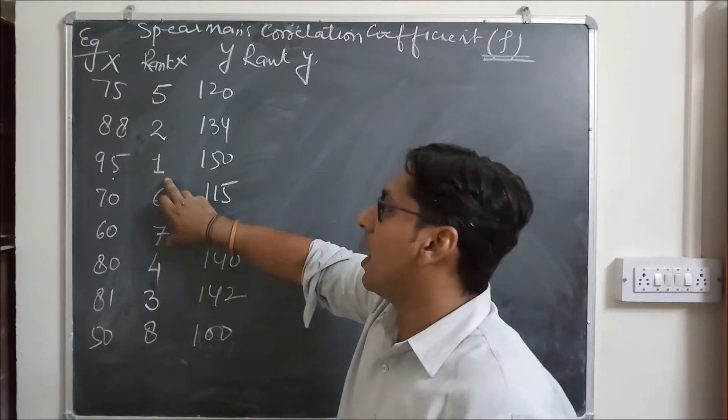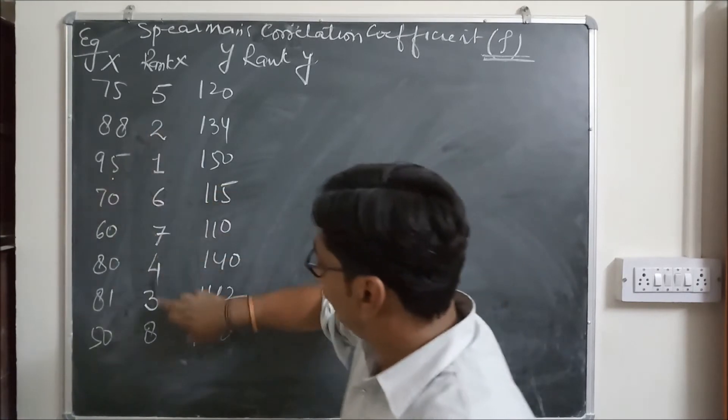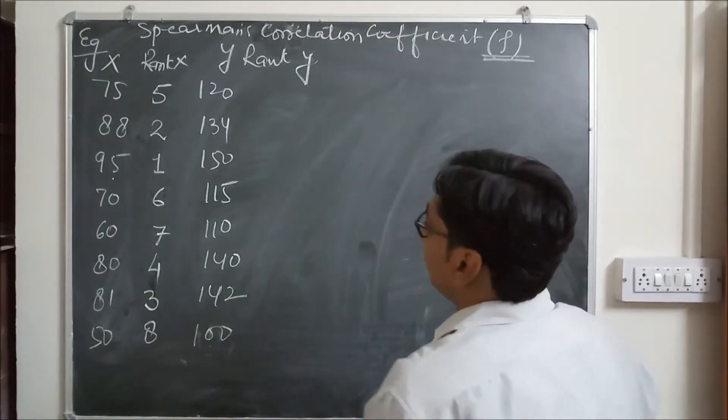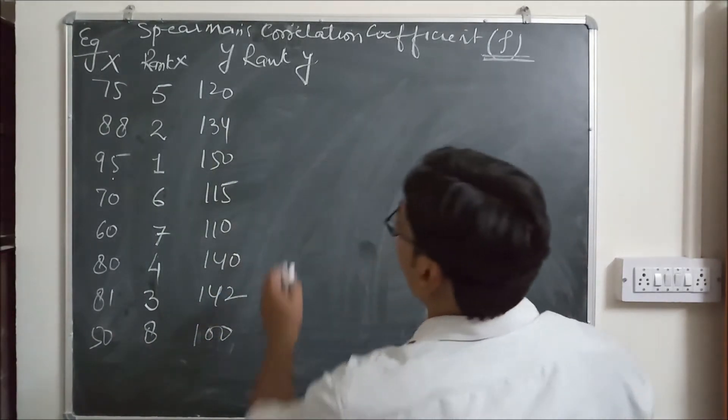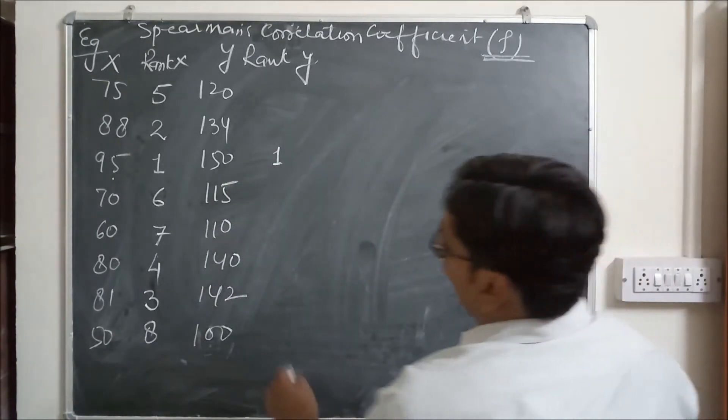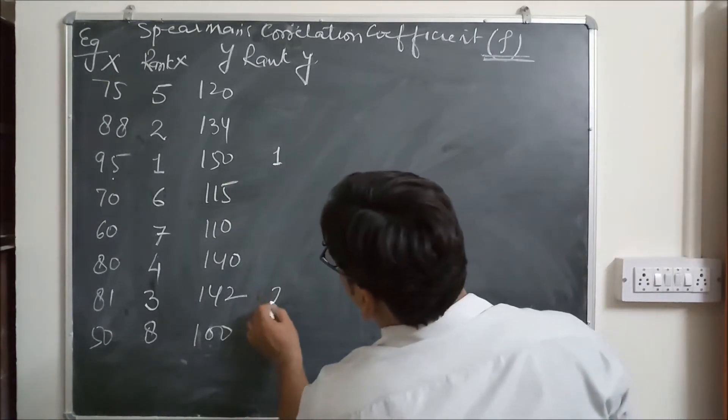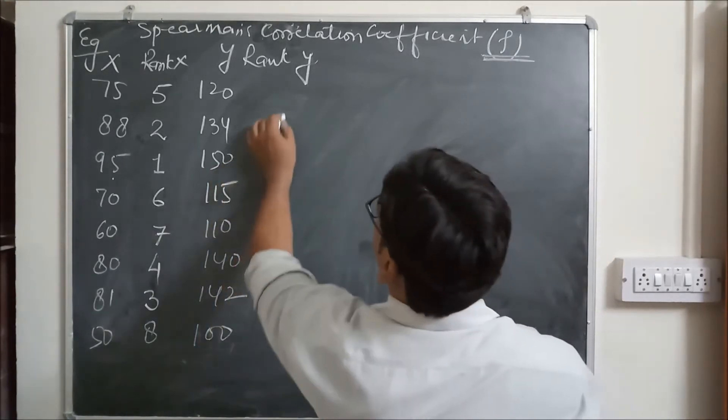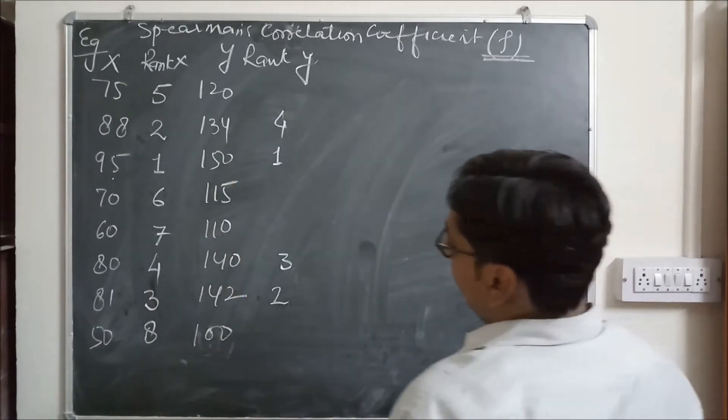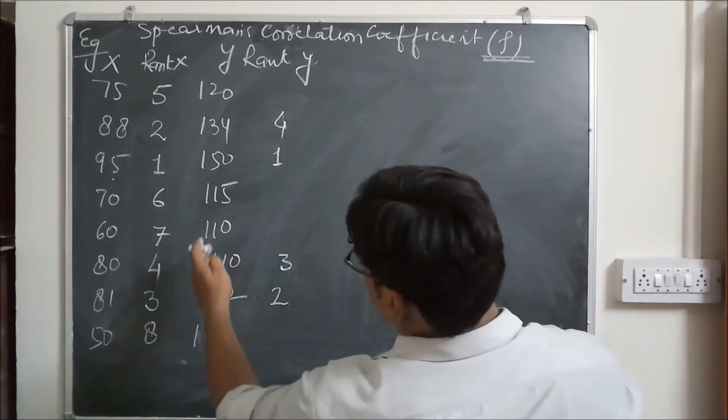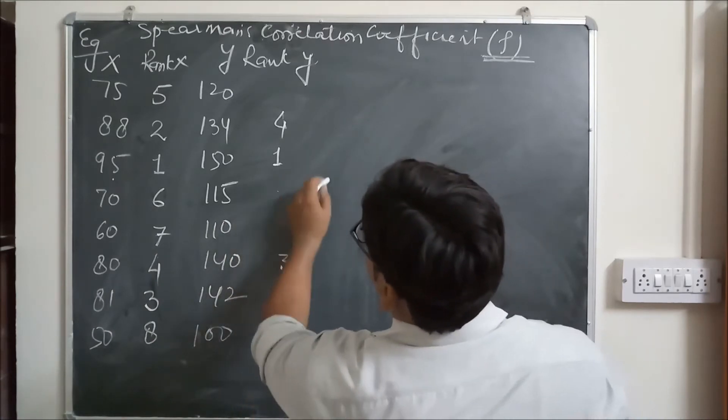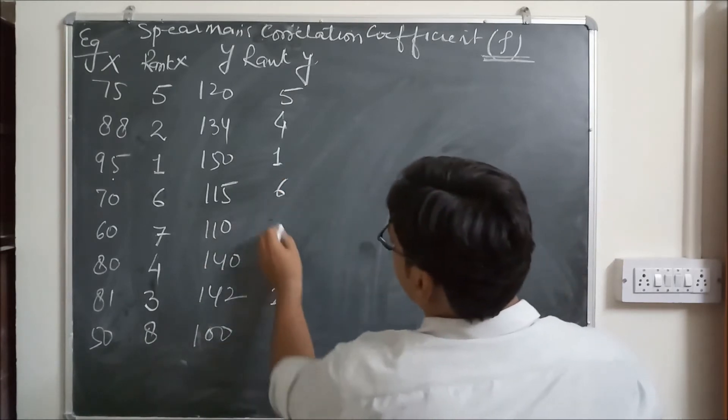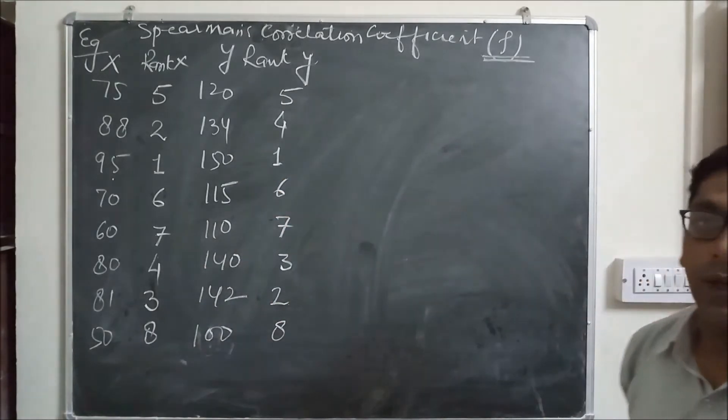The highest number is given 1 and then 2, 3, 4, 5, 6, 7, and 8. Same we give rank to Y. The highest number is 150, so we give 1. Then 142 is 2, then 140 is 3, 134 is 4, 120 is 5, 115 is 6, 110 is 7, and 100 is 8.